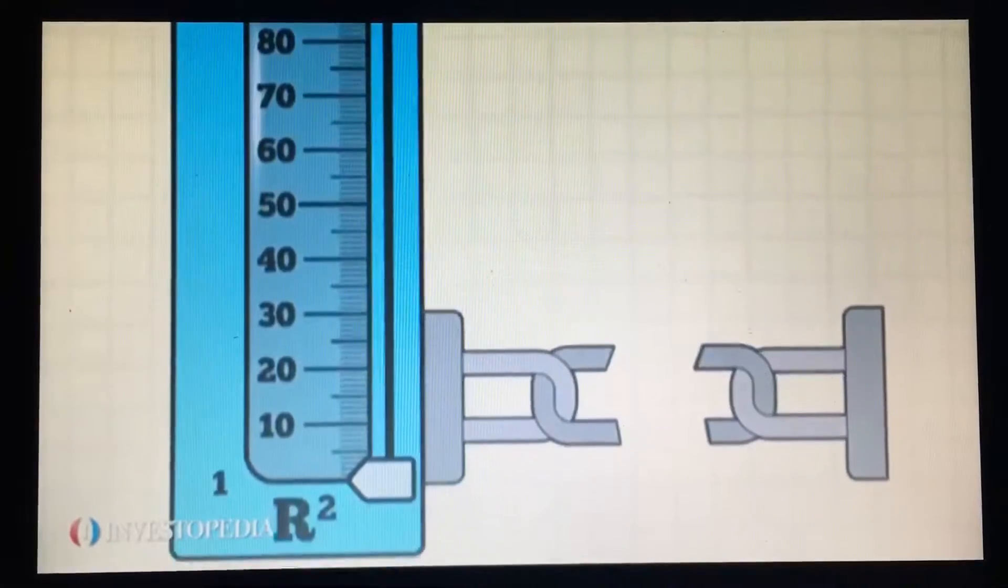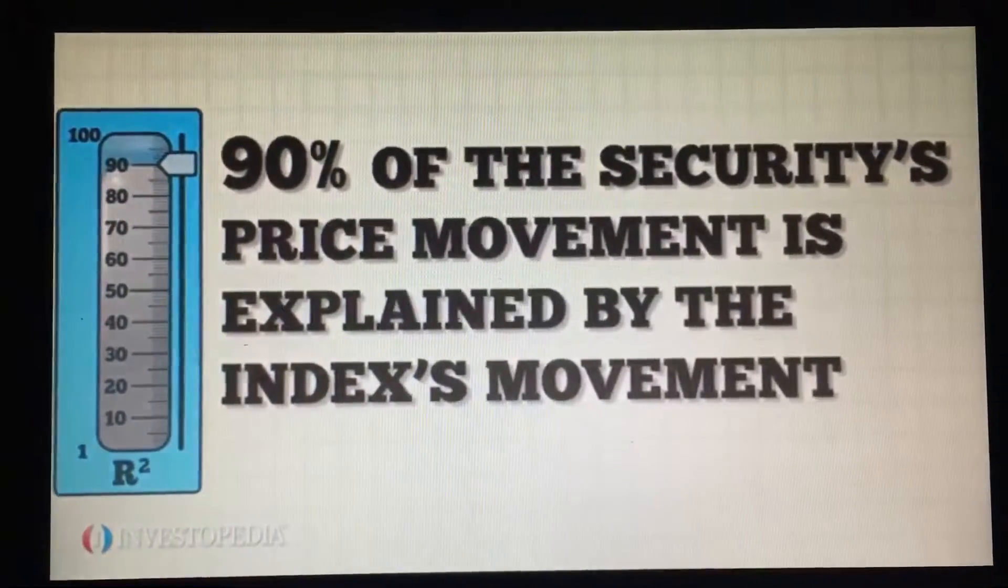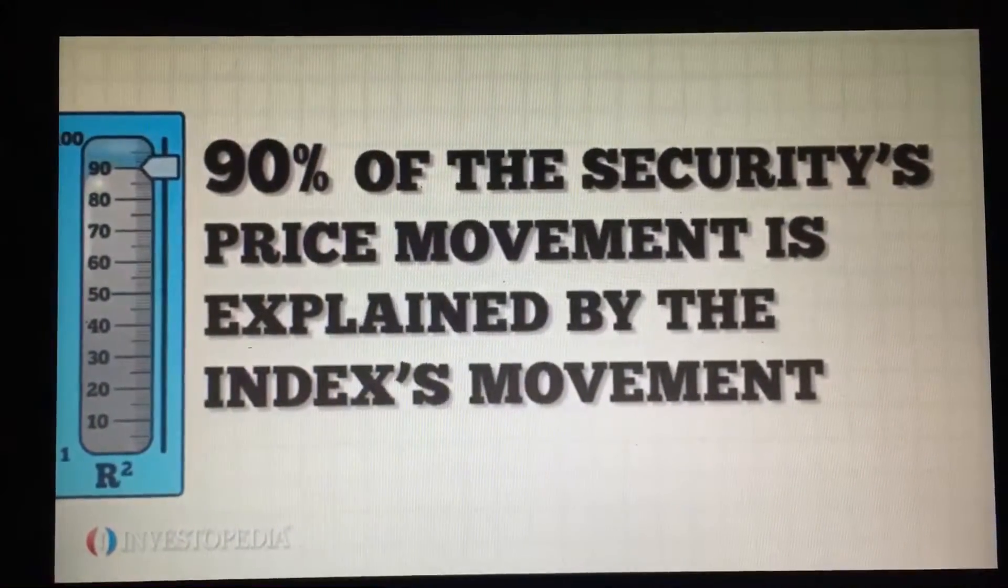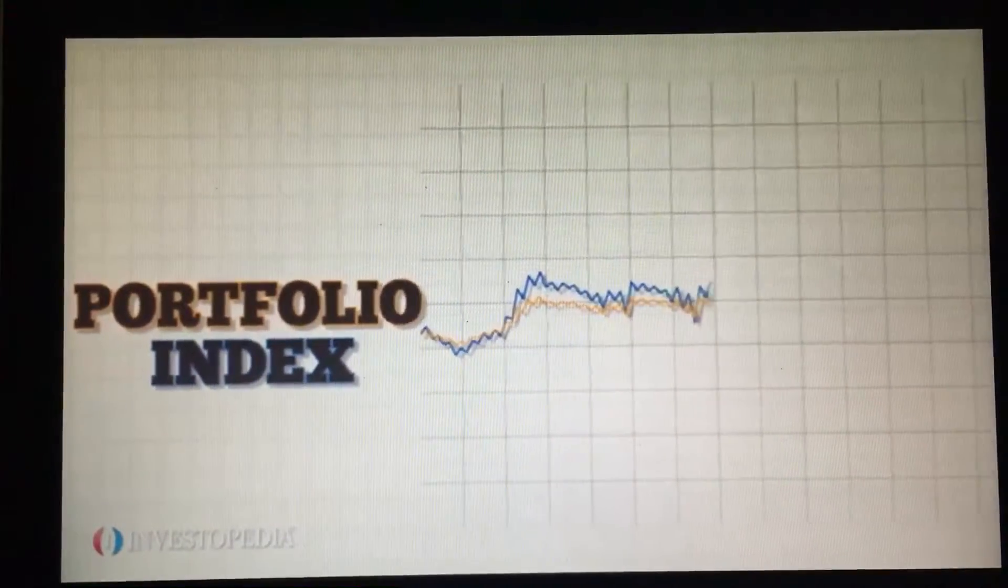A security with an R-squared of 90 means that 90% of the security's price movement is explained by the index's movement. This allows the investor to evaluate the relative performance of the portfolio and predict how the portfolio may perform in the future when compared against the broader market.